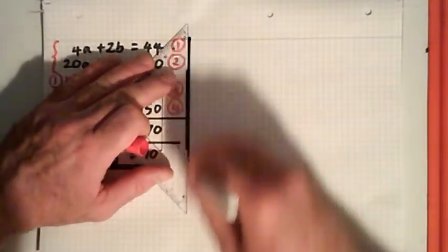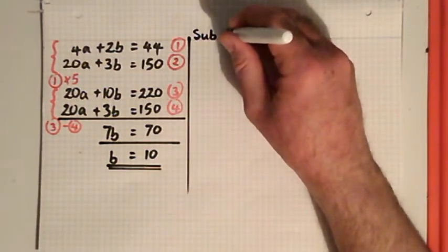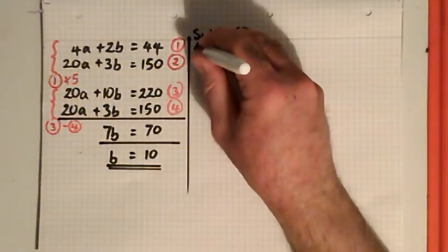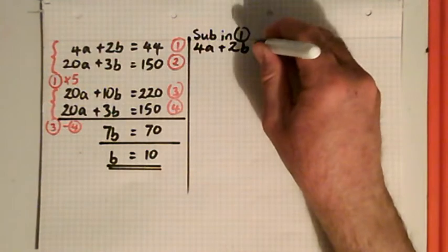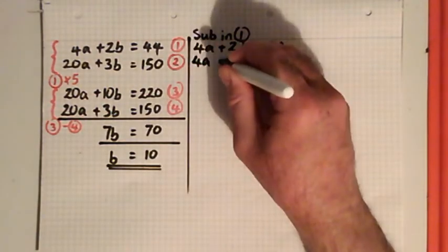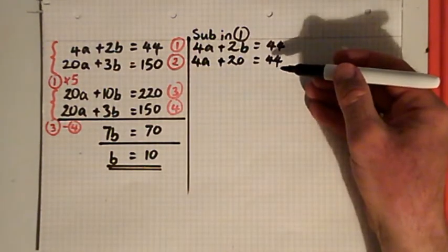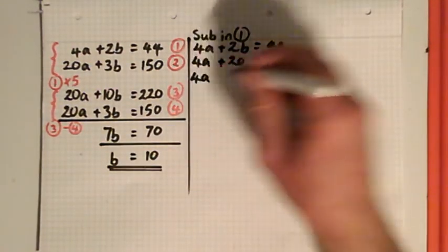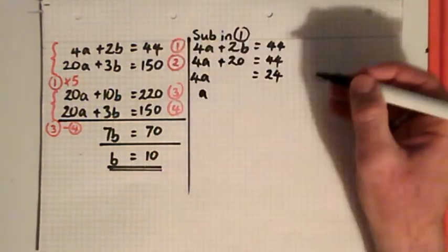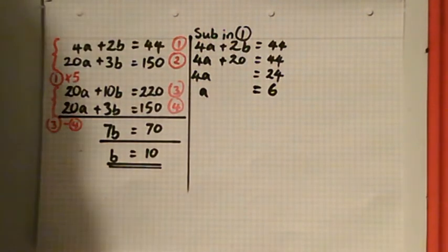Let's draw a nice neat line down there. Now I can substitute that value into equation 1. So equation 1 says 4a + 2b = 44. Now I know that b = 10, so that becomes 4a + 20 = 44. And that's easy to solve: 4a = 24. Divide both sides by 4 to get a = 6.